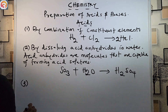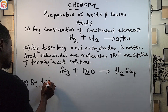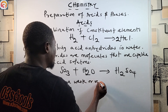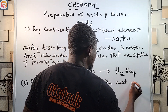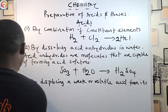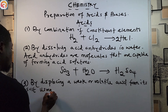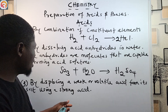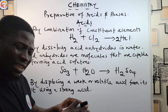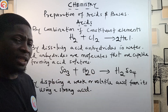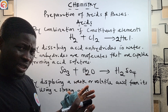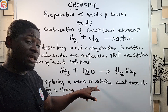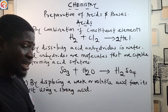Another method for preparing acid is by displacing a weak or volatile acid from its salt using a strong acid. So when you have a strong acid and a solution of a salt, you can use that strong acid to displace the weaker or volatile acid from that salt.